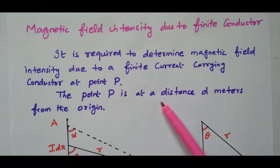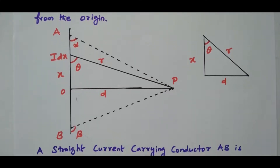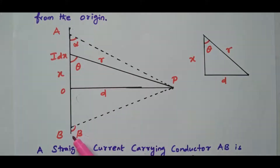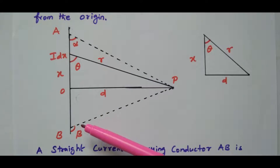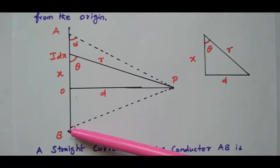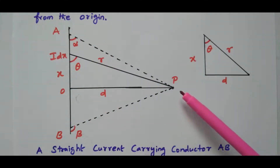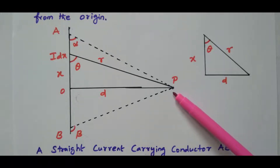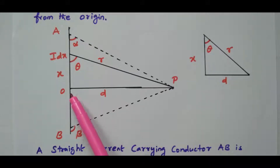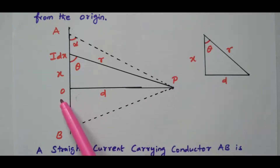Point P is at a distance d meters from the origin. We will refer the diagram so that it will be easier. AB is nothing but a finite conductor in which the current is flowing. When the current flows through conductor AB, the magnetic field is produced in the form of concentric circles. AB is the steady conductor in which steady current is flowing. Our aim is to find the magnetic field intensity at point P, which is at a distance d meters from the origin.